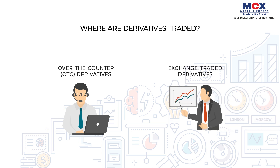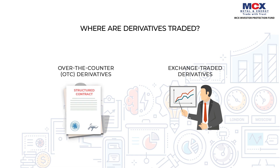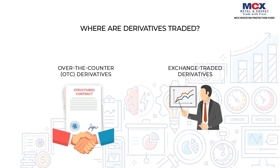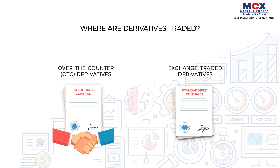Over-the-counter (OTC) derivatives are structured contracts negotiated between two parties outside an exchange. These are customized contracts. Exchange-traded derivatives are standardized contracts traded on an exchange platform such as MCX. These contracts are vetted by the regulator.